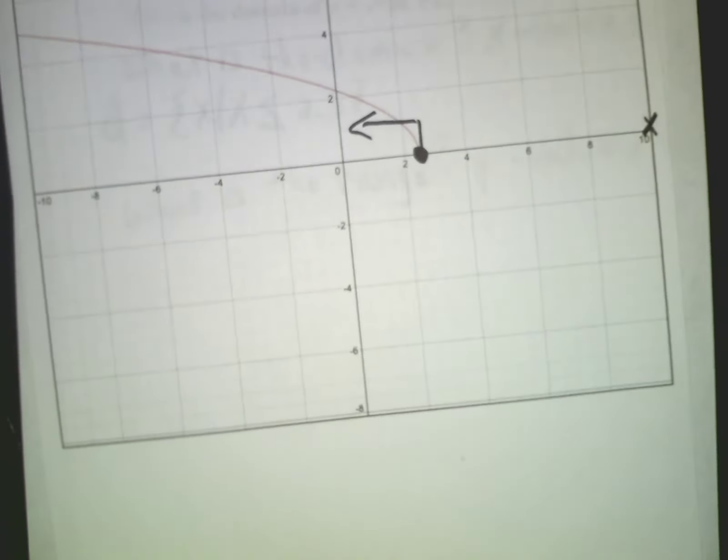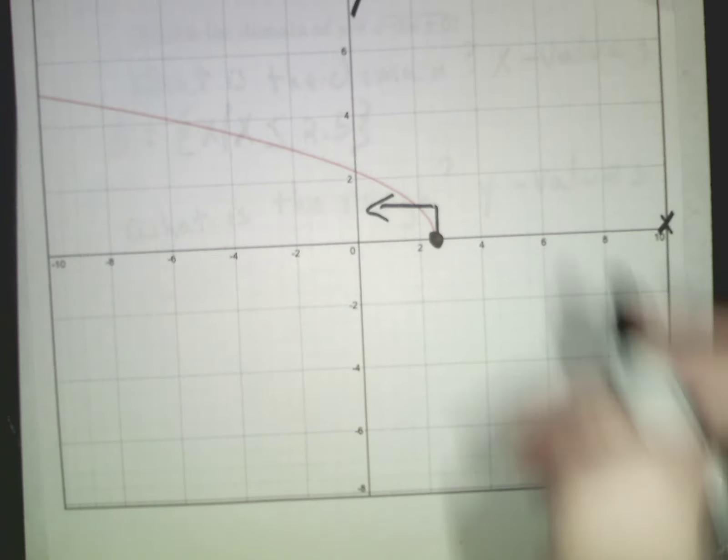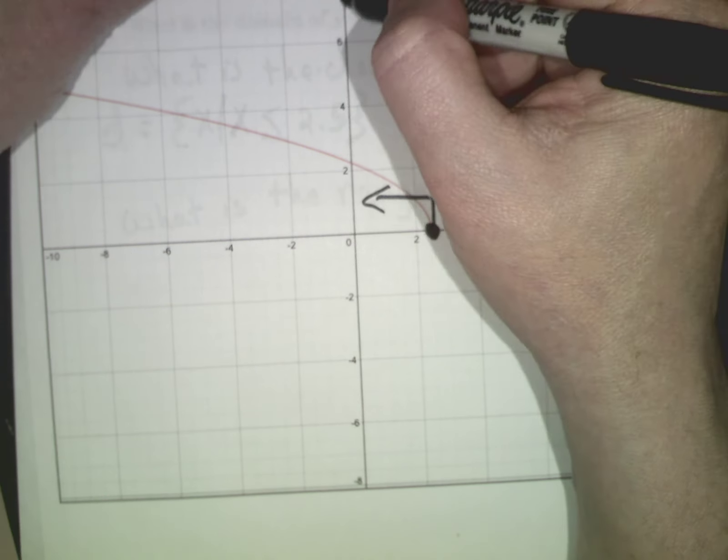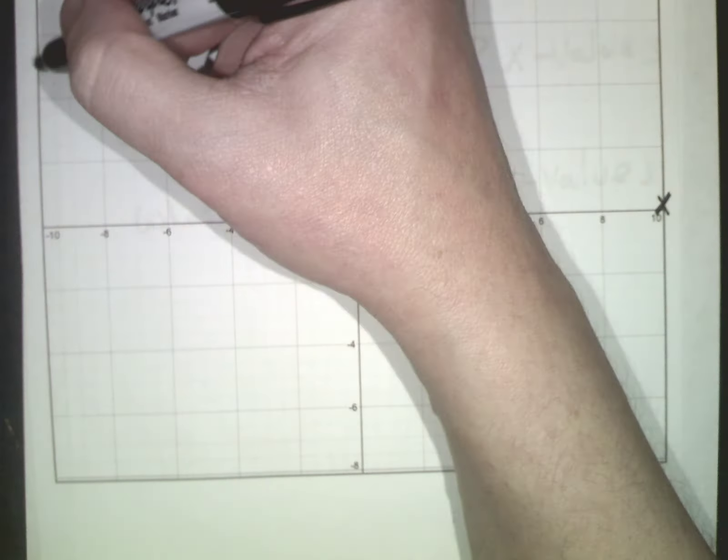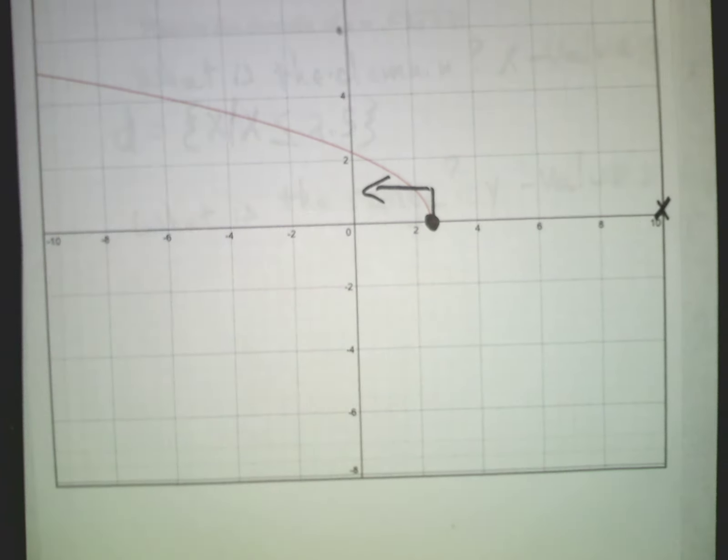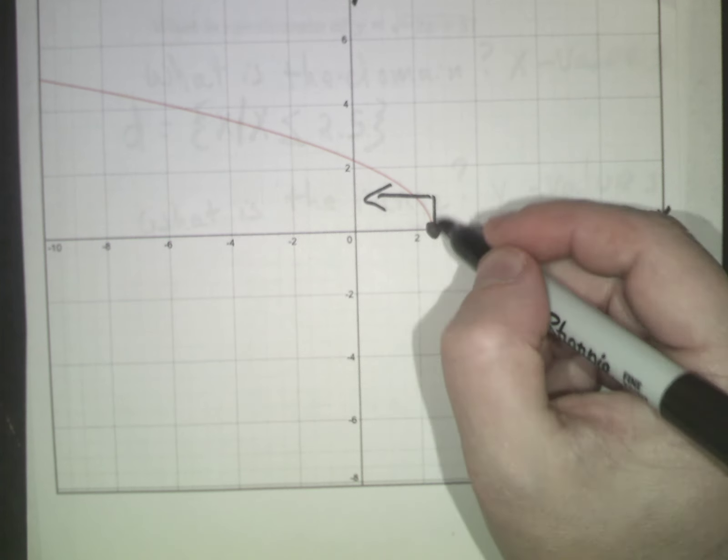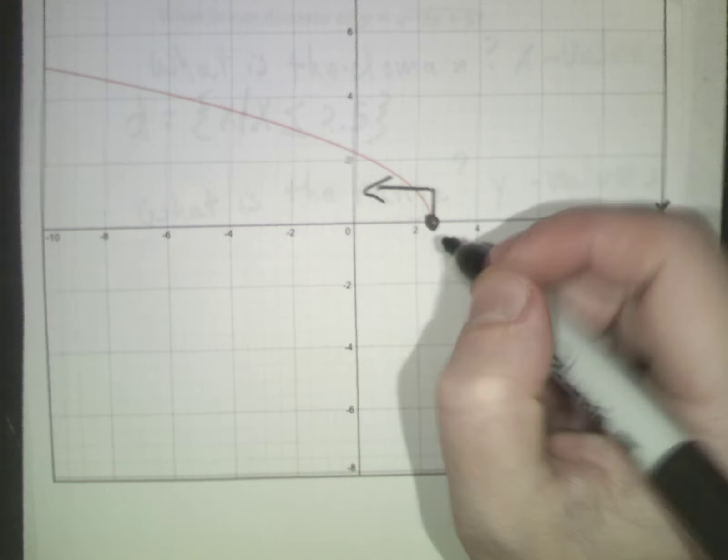Next we're going to look at the range. I look at my y values. This keeps going up. In the x direction it's going to go on forever, and in the y direction it's going to keep going up and up and up. The lowest y value I have is right here, and the lowest y value is zero.